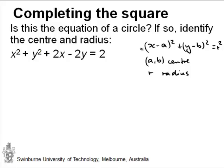So if we wanted to write this like that, first of all let's rearrange a bit and put everything that relates to x together and everything that relates to y. So let's write x squared plus 2x and then plus y squared minus 2y is equal to 2.